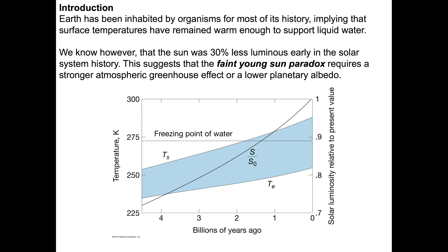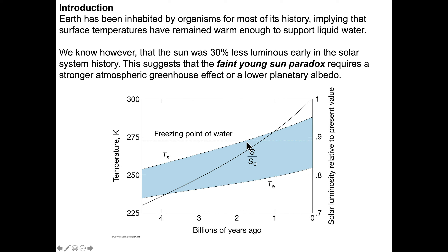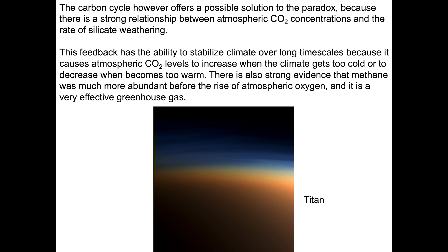This is explained here in a somewhat confusing way — the physics is correct but the presentation has a bit to be desired. What you want to think about is the temperature scale in Kelvin: 273.15 kelvins equals zero degrees centigrade. Early in the sun's history, it was dim enough that it was incapable of heating Earth's surface to the point of having liquid water — that only happened about 1.8 billion years ago. However, we know liquid water existed much further back, so something else must have made up for the faintness of the early sun. The carbon cycle is one possibility.